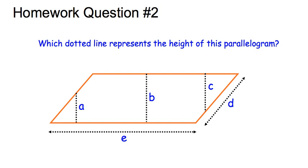Homework question number two: you need to decide which one of the dotted lines represents the height of this parallelogram — dotted line A, B, C, D, or E. Remember the height must be at a 90-degree angle to the base.